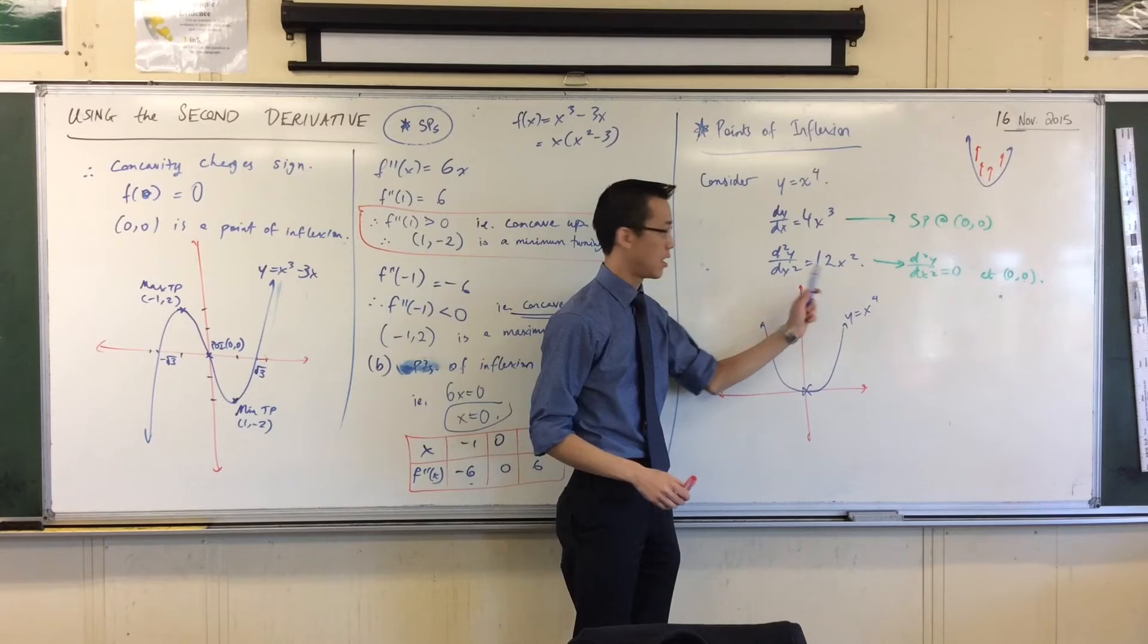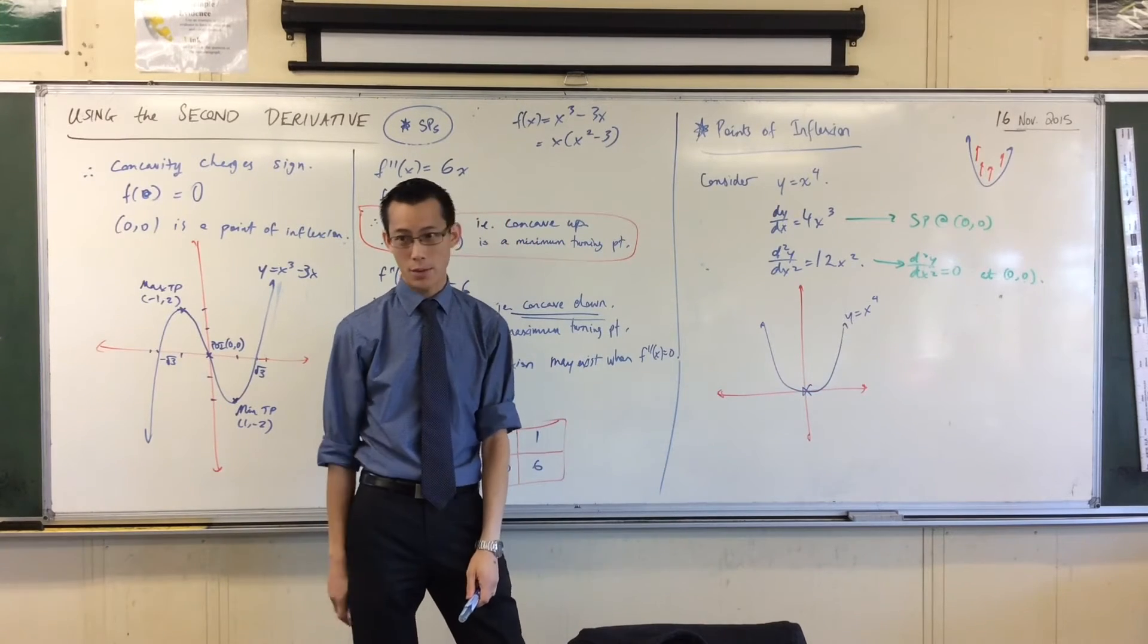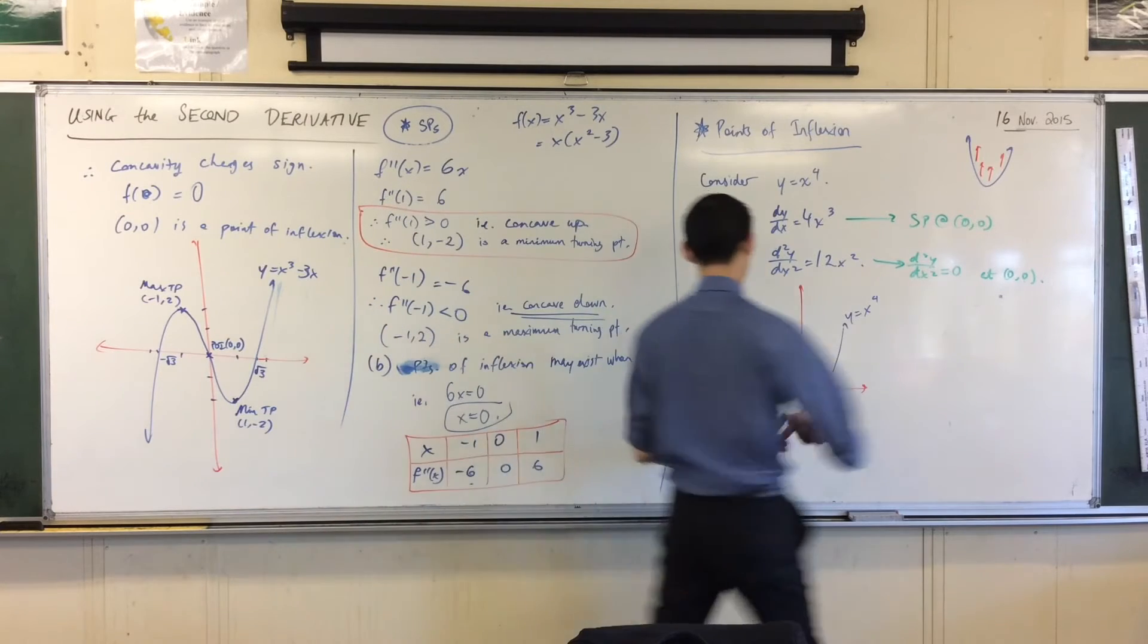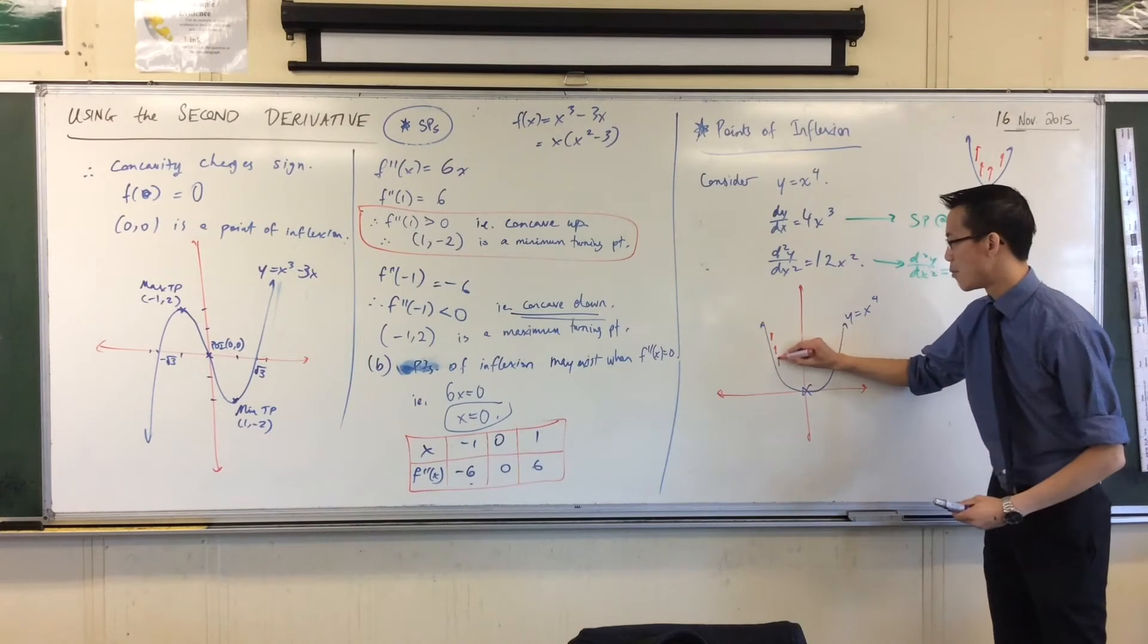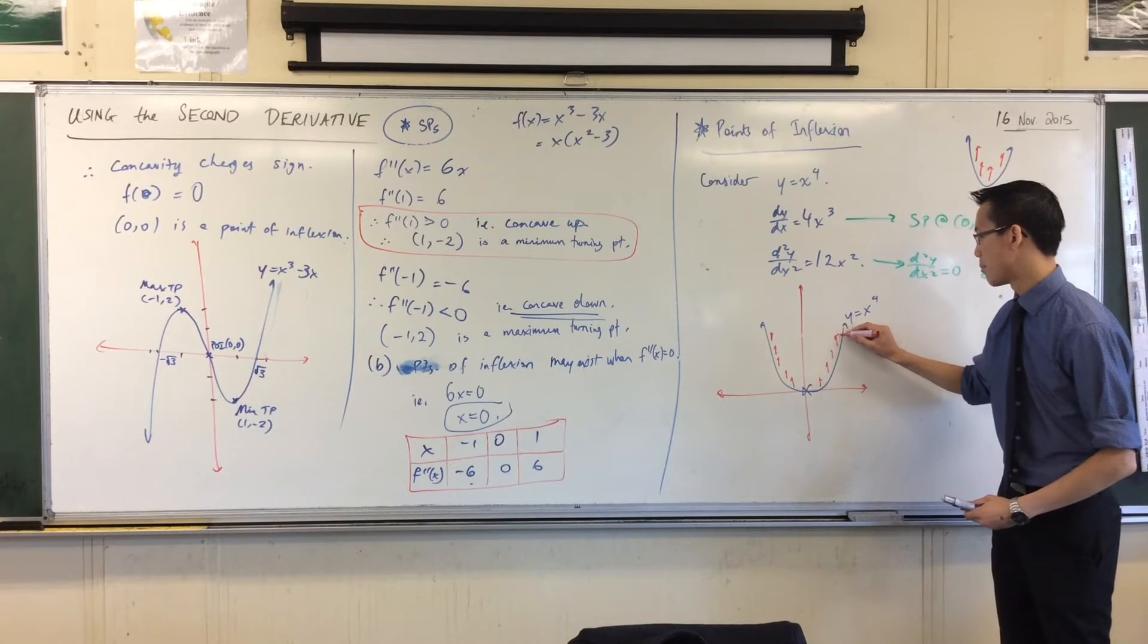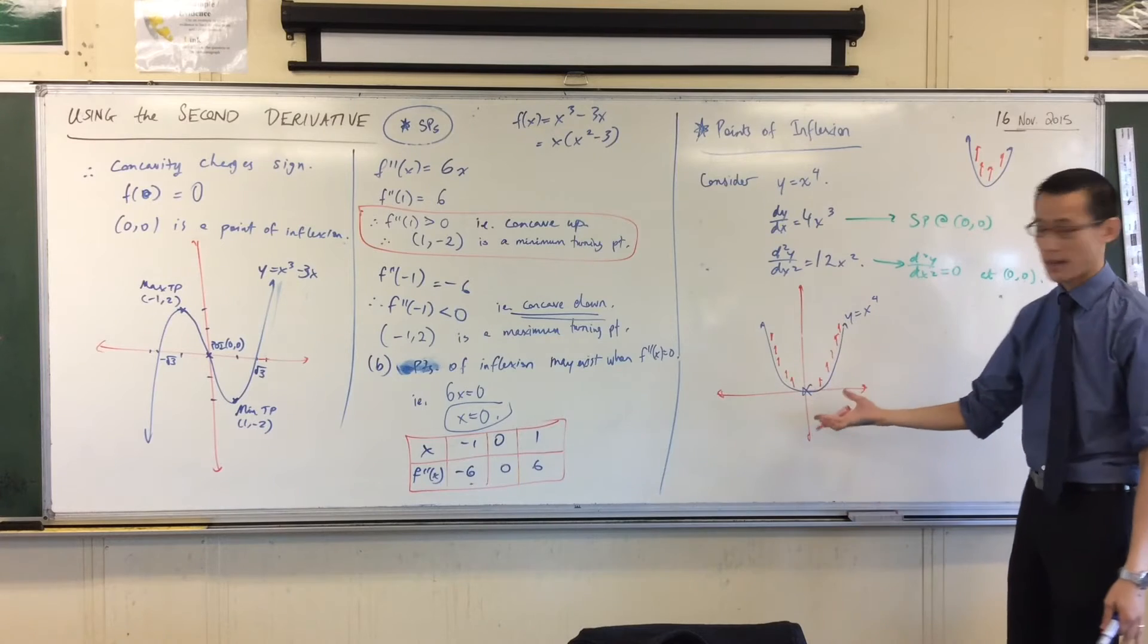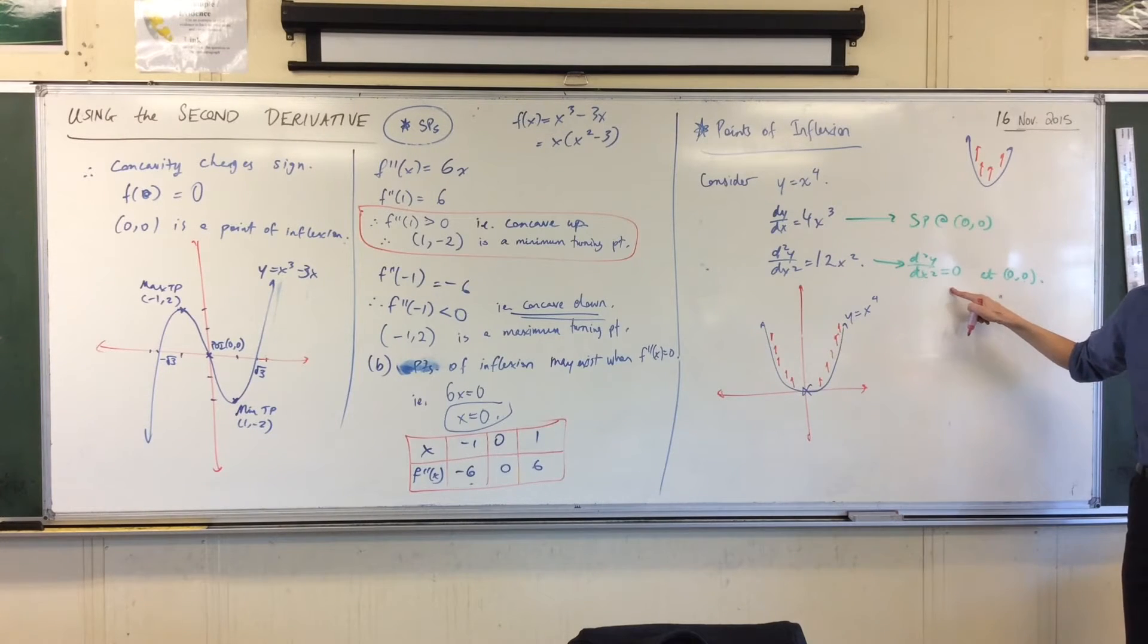It's an even function. It's concave up almost everywhere. Almost everywhere, right? Concave up, up, up, up. Also up, up, up, up, and up. But at the origin, there is no concavity. At x = 0, the second derivative is zero.